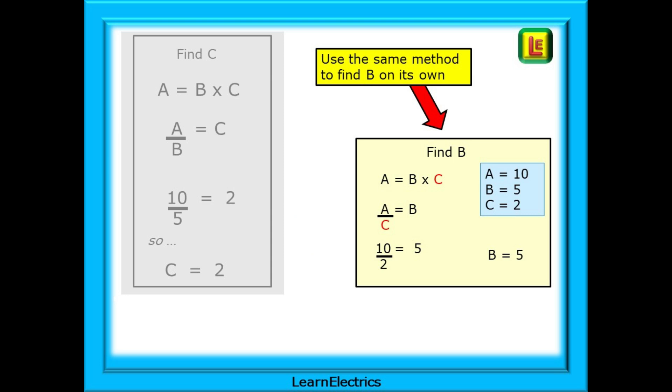If we only know A and C and need to find the value of B, we would use the same process. Move C to the bottom on the left to leave B on its own. Put in some numbers and we have B equals 10 over 2 which is 5. And we use this exact same method for some essential electrical formulas.